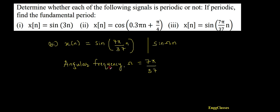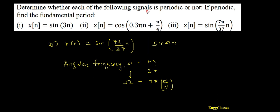The condition for a sinusoidal signal to be periodic is that the angular frequency ω must be a rational multiple of 2π. If I can express ω in this form, I would say the given signal is periodic, and n is going to be its fundamental period.